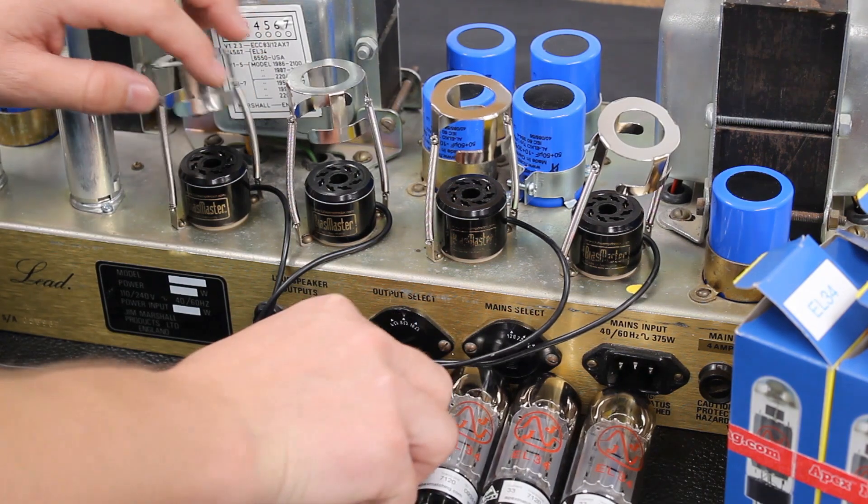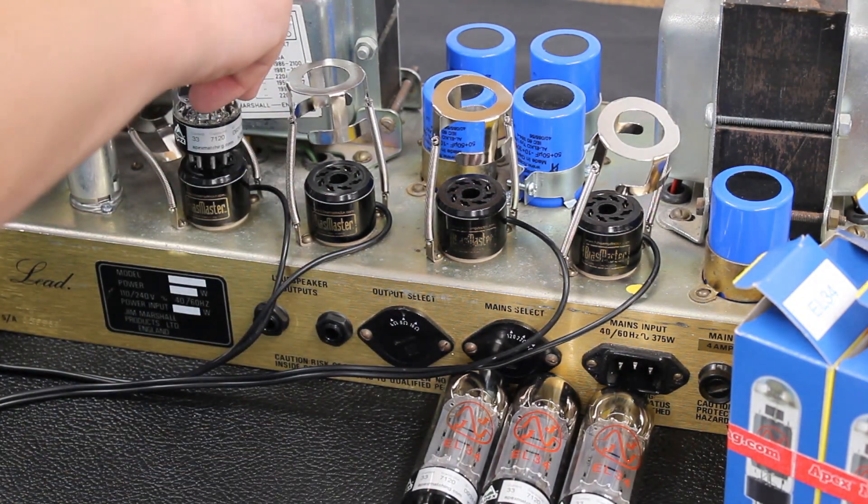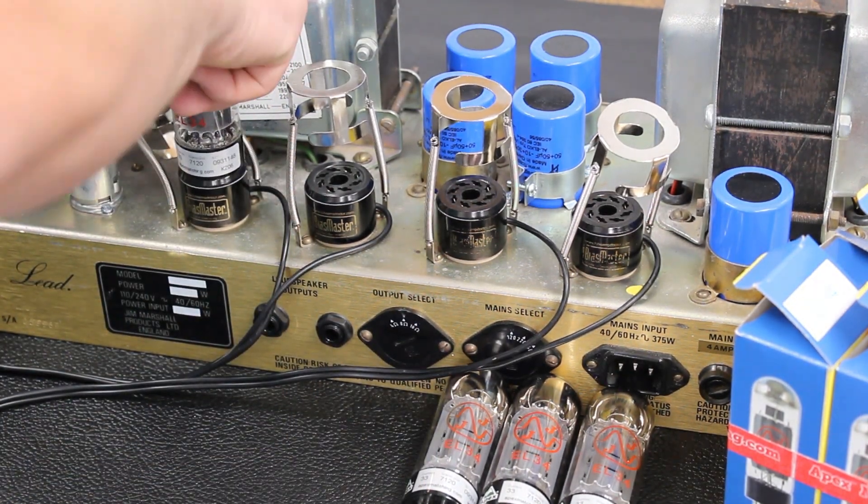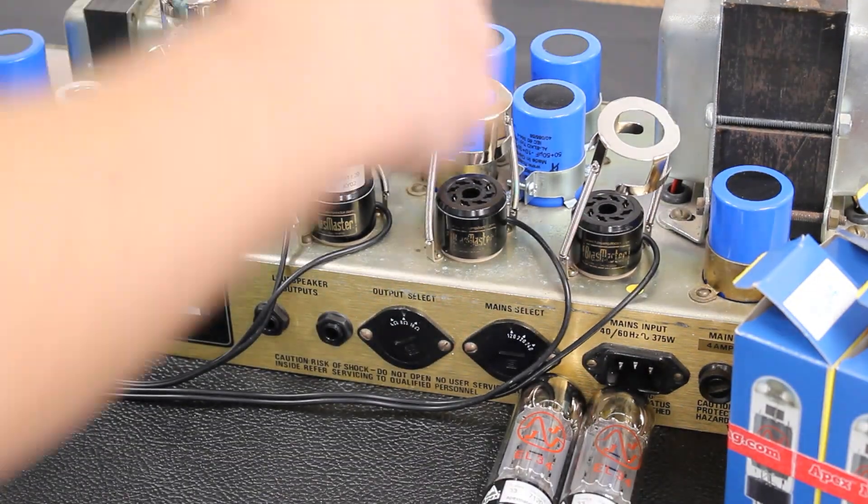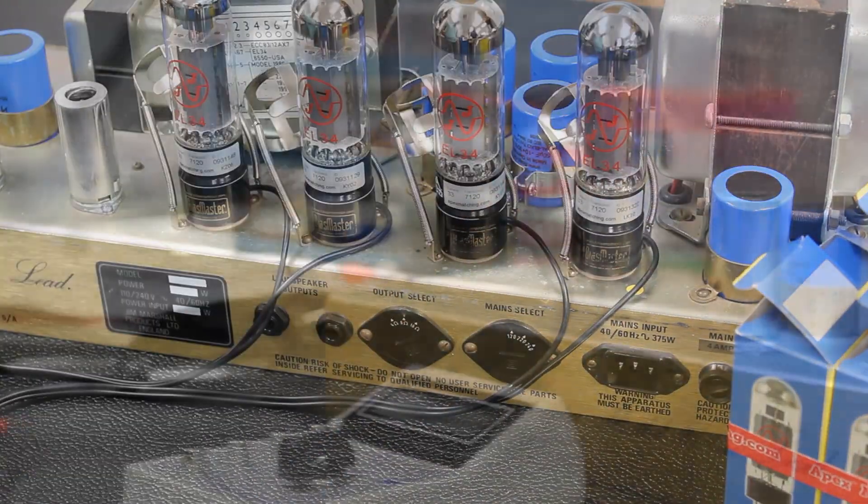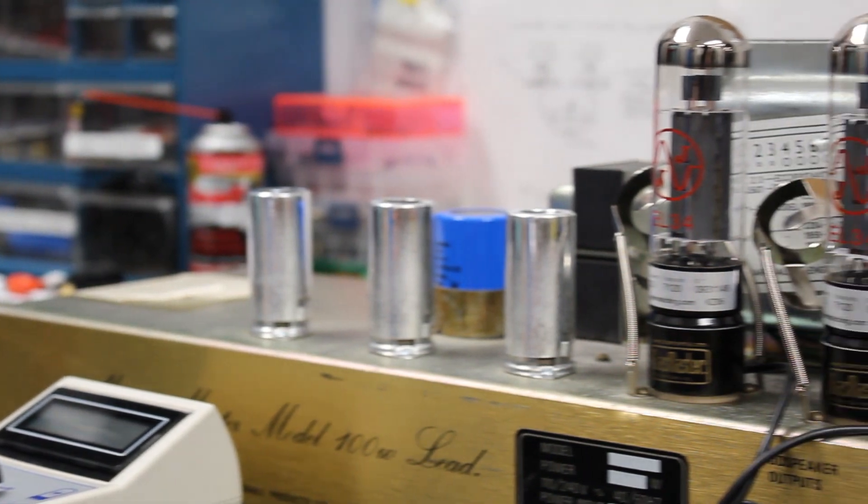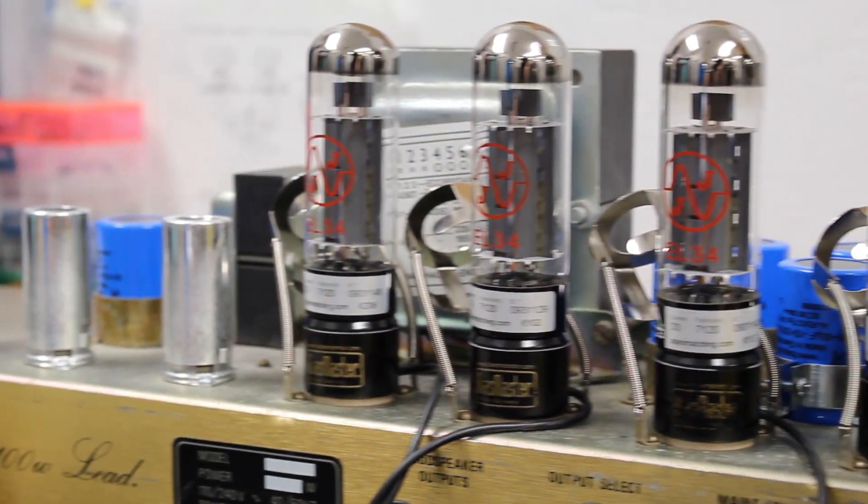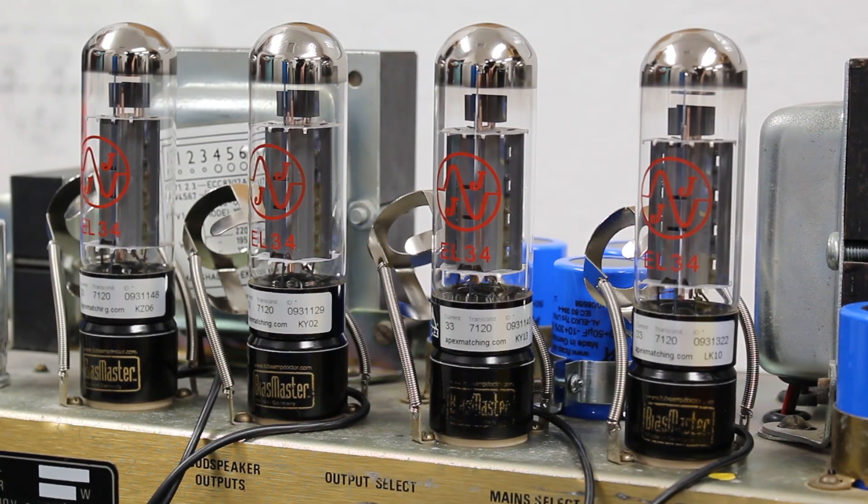Apex matching is a complex multi-step process designed to ensure that you get the highest quality match tubes available. Apex performs extensive testing and analysis on each tube that runs through their system to provide an incredibly accurate and precision matched tube set.